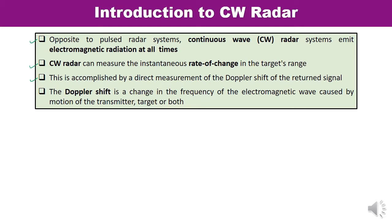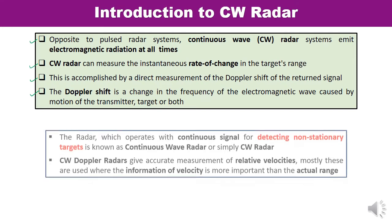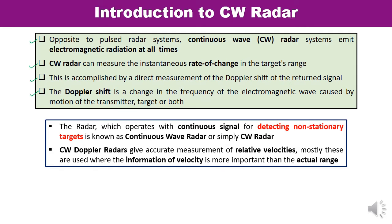The Doppler shift is a change in the frequency of an electromagnetic wave caused by the motion of the transmitter, the target, or both. The radar which operates with a continuous signal for detecting moving targets — that is, non-stationary targets — is known as a continuous wave radar, or simply CW Doppler radar. It gives accurate measurements of relative velocities, and in some applications the velocity information is far more important than the actual range.